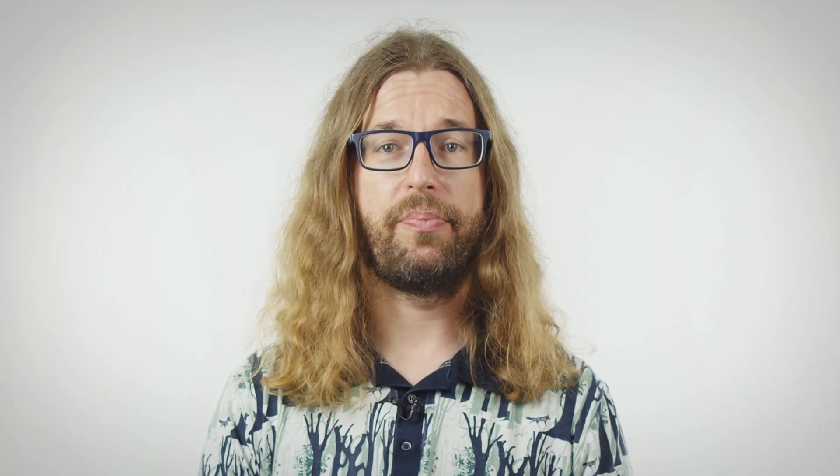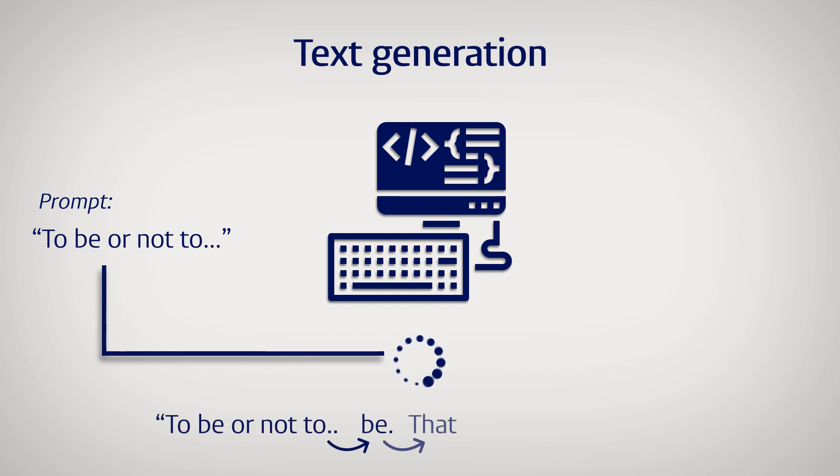Time for the second step. Turning text prediction into text generation. Well, that's actually quite easy. You just give the LLM some text to start with. This is called the prompt. And then you tell it to predict the next word. To add that predicted word to the text, to predict the next word after that, and so on.